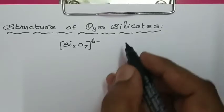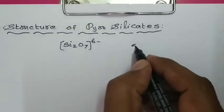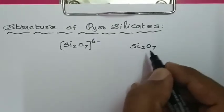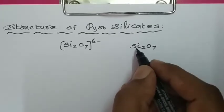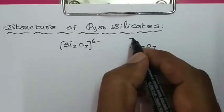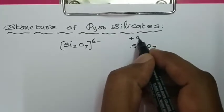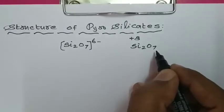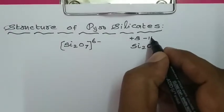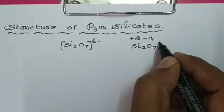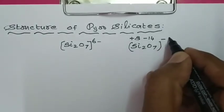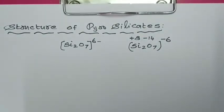How will you get this 6⁻ ion? For Si₂O₇: we know 1 silicon is a 4+ ion, so 2 silicon gives 8+. For oxygen, 1 oxygen is minus 2, so 7 oxygen gives minus 14. When we add these two, we will get a 6⁻ ion.